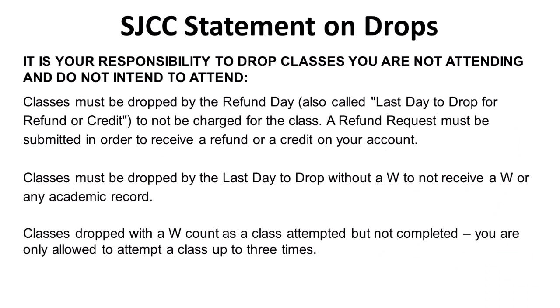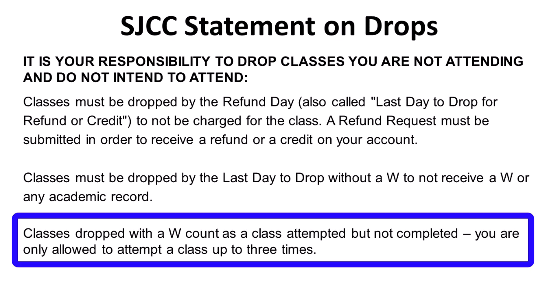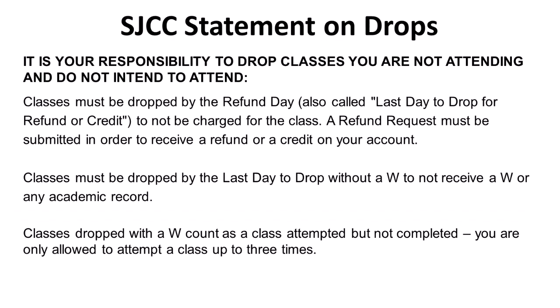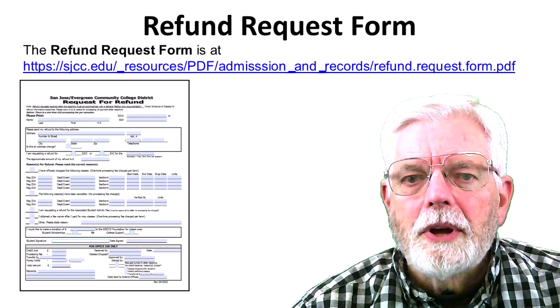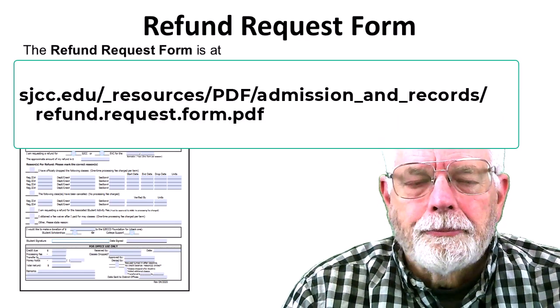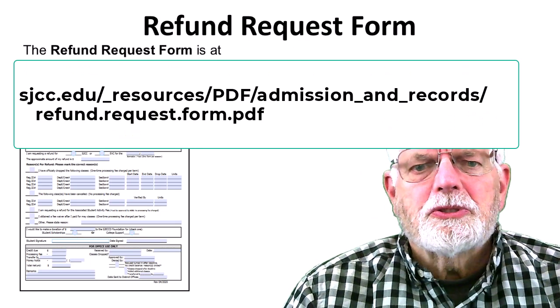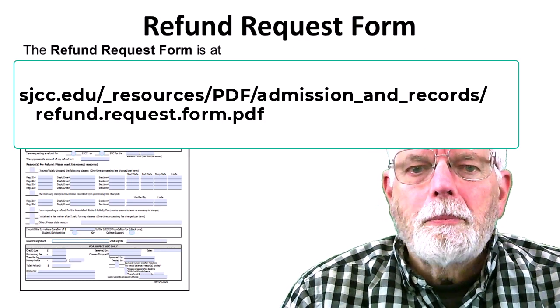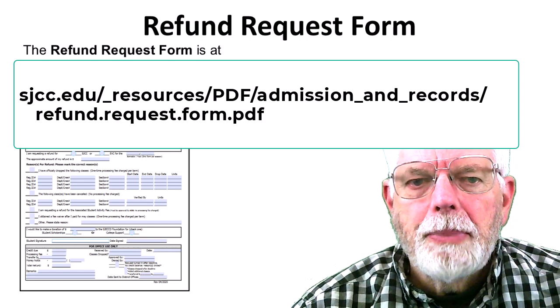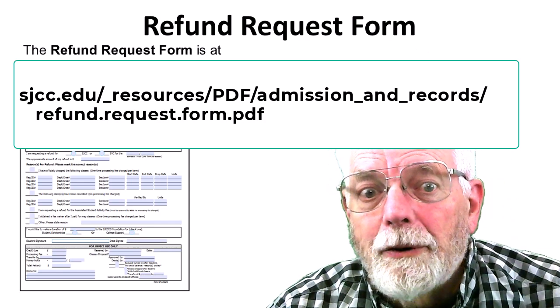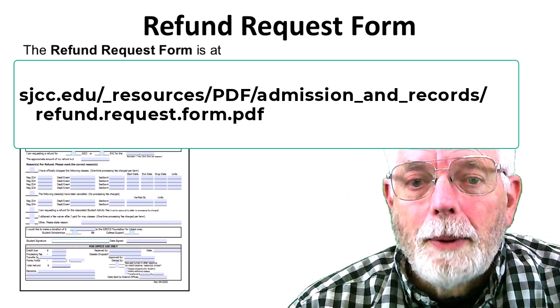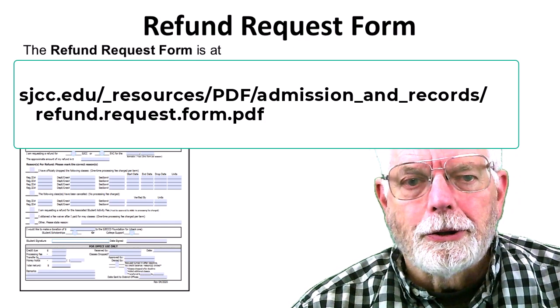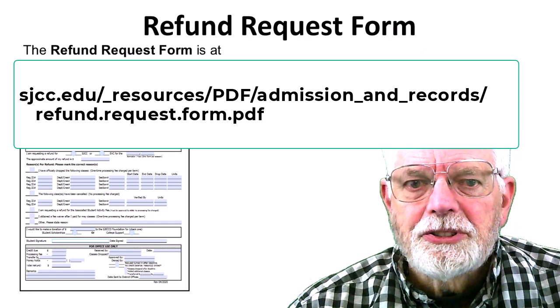The official SJCC statement on drops confirms what has already been said but also provides some additional information. You are only permitted to sign up for a course and drop three times. If you have signed up for a class and dropped it three times, you won't be permitted to sign up for that class again. The form to request a refund is located on the SJCC website at sjcc.edu/resources/pdf/admission_and_record/refund.request.form.pdf. Watch out for the underscore and period characters. If you drop a class by the first drop date, remember to send in this form by that drop date.